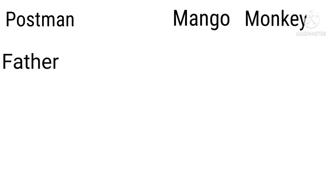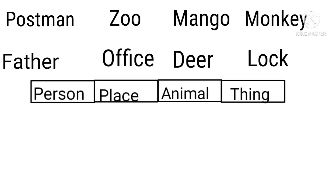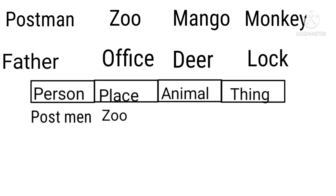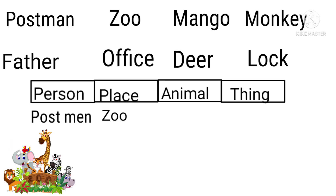Here is a list of words which we have to put in the correct place in the table. First one is postman. Postman is the name of a person, so we will write it under person. The next one is zoo. Zoo is the name of a place, so we will place it under place.